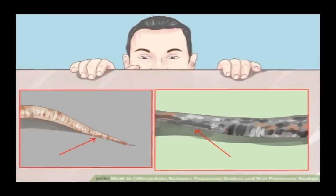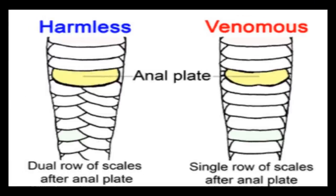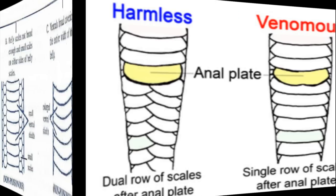Firstly, we can observe the tail. If the tail is laterally compressed or oar-shaped, then it may be poisonous. Or if the tail is cylindrical and tapering, then it may be poisonous or non-poisonous.